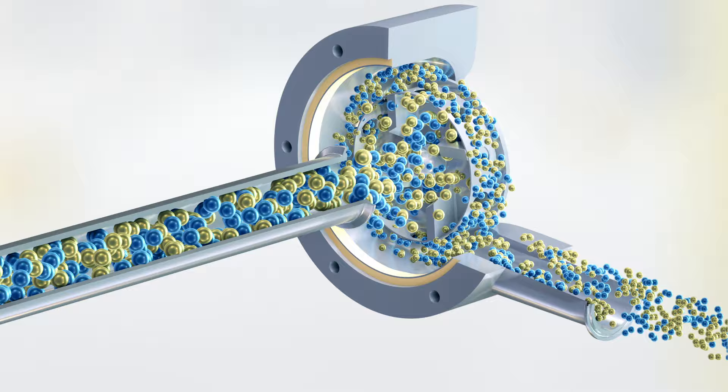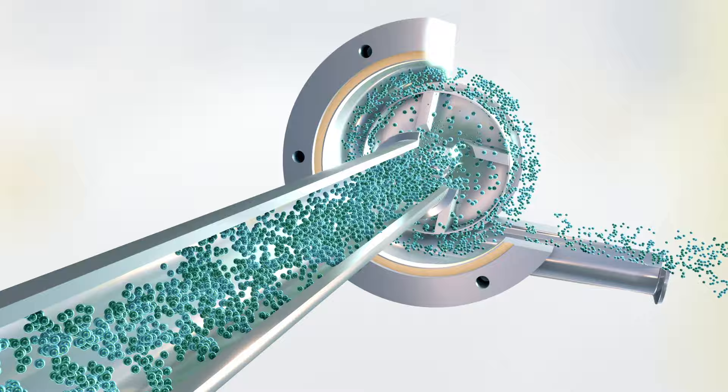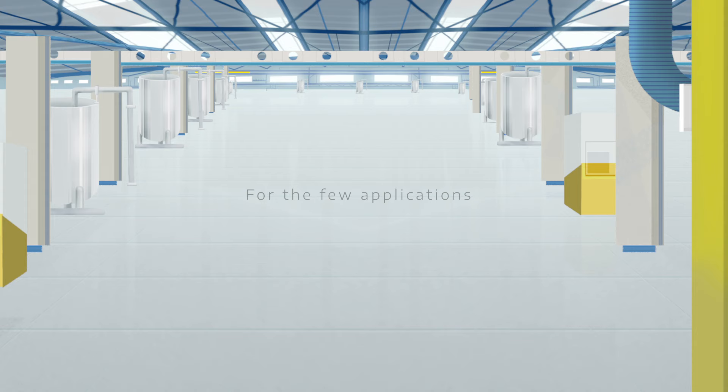This is followed by intense hydraulic shear as the product is forced through the stator screen and circulated back into the mix. Fresh material is continually drawn into the workhead progressively reducing globule or particle size and quickly resulting in a homogeneous, uniform product.